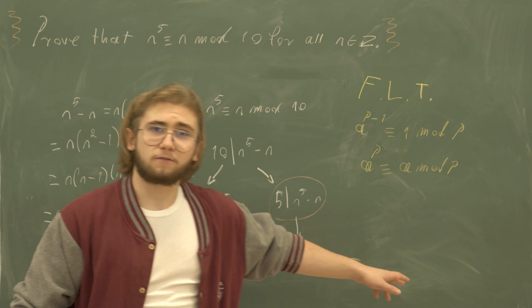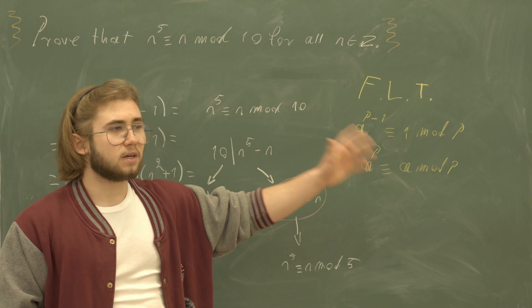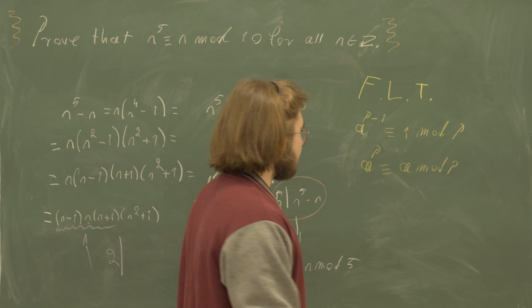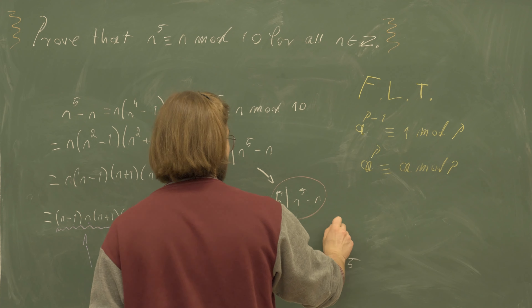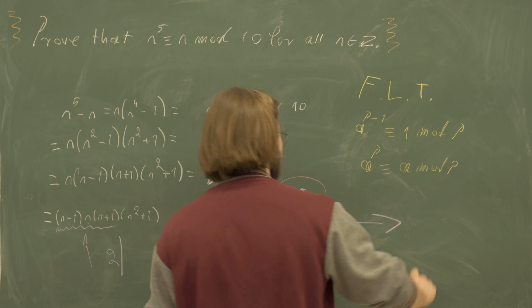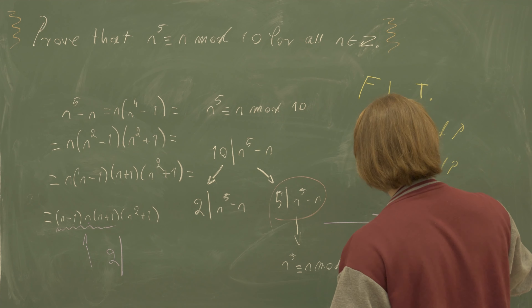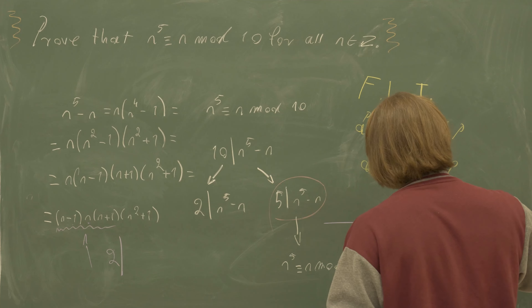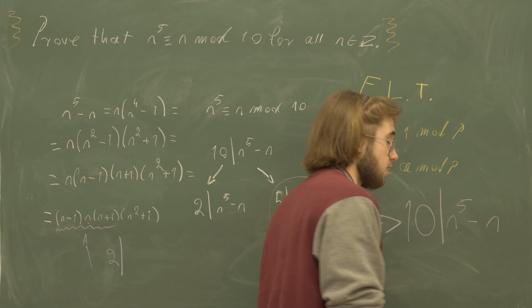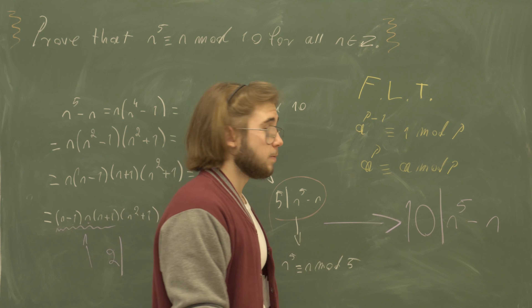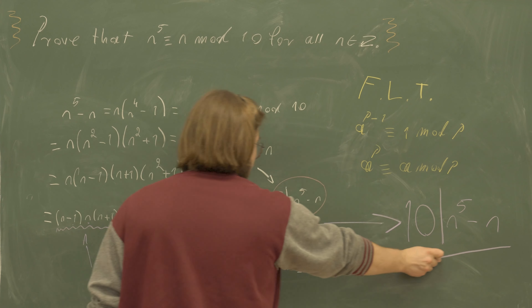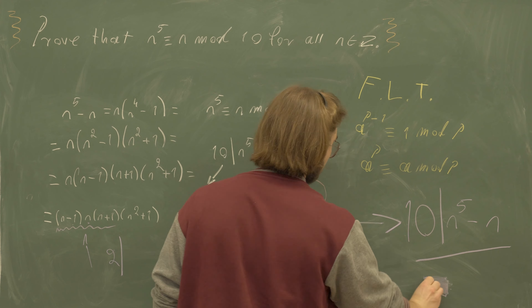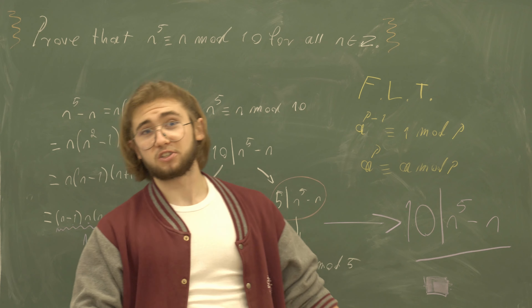So we have n^5 minus n divisible by 2, and n^5 minus n divisible by 5. Since it is divisible by all prime factors of 10, it must also be divisible by 10 — meaning 10 divides n^5 minus n, which is our conclusion.